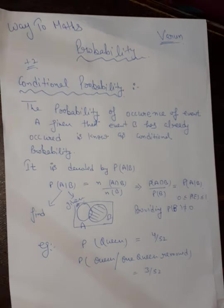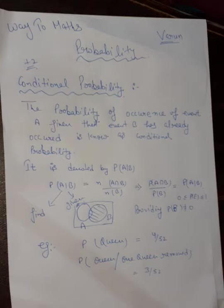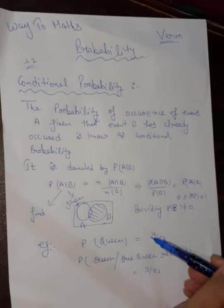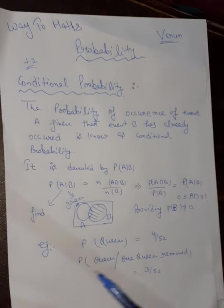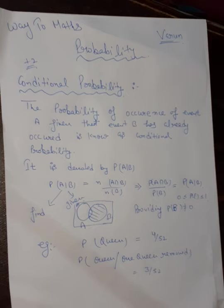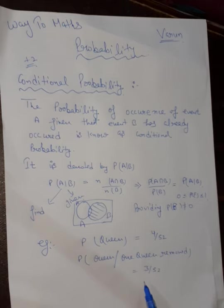Now let us do one example. Find the probability of a Queen from a deck of cards. You know there are 4 queens out of 52 cards. But given that one queen is already removed, find the probability of drawing a Queen. With one queen removed, there are 3 queens left out of 51 cards — but the stated answer here is 3 by 52. That concludes the definition example.